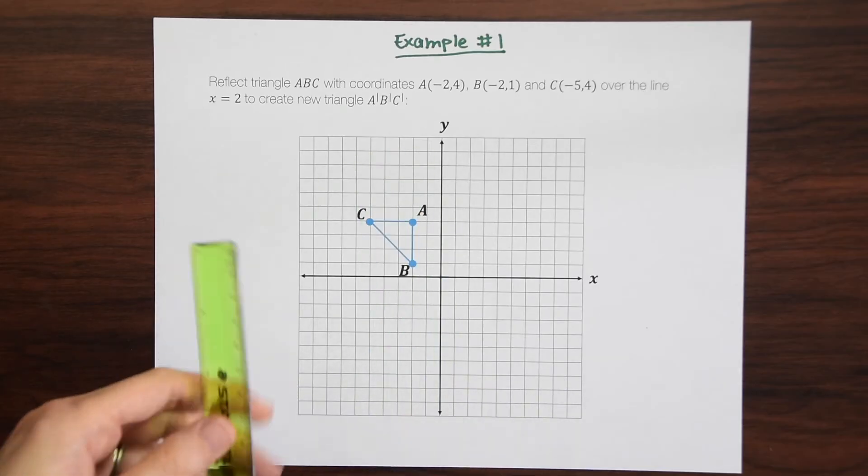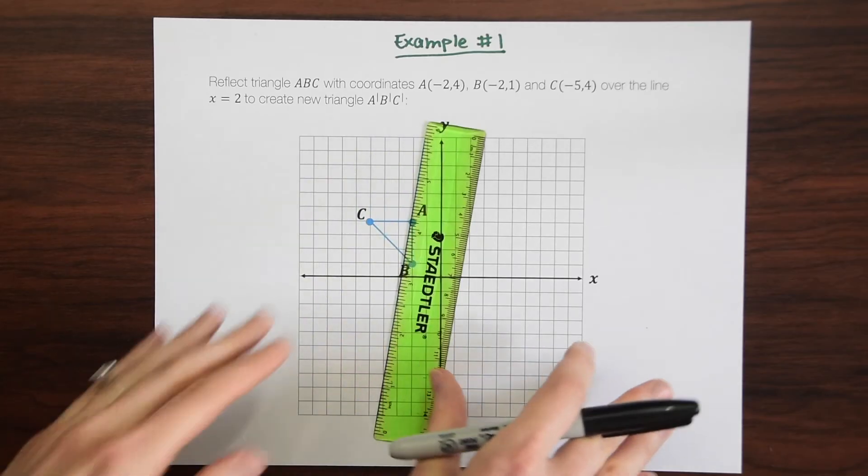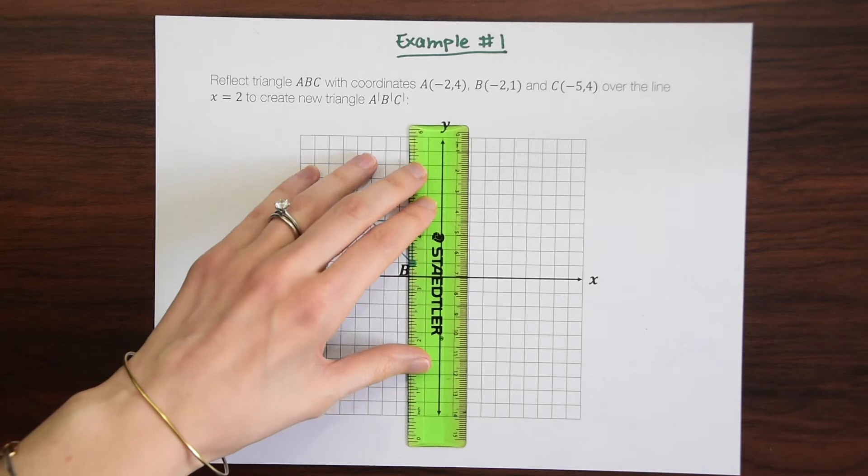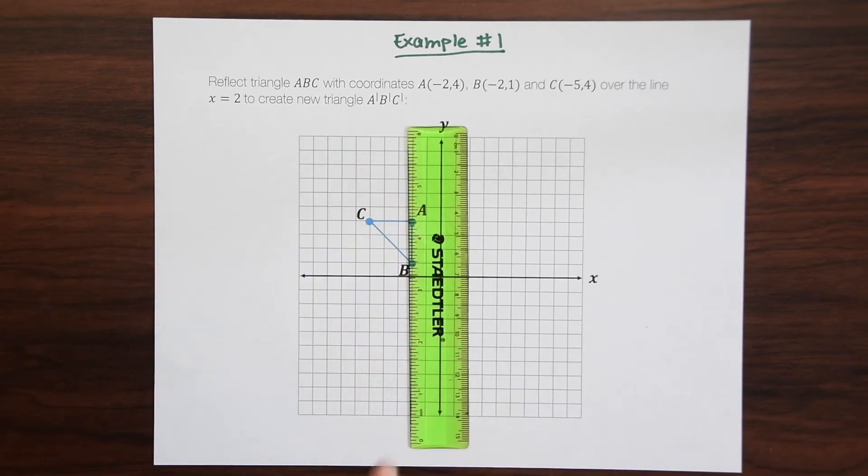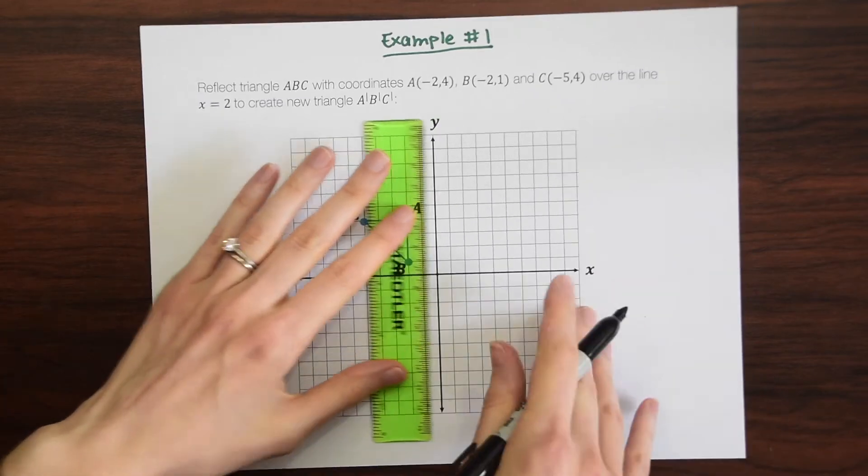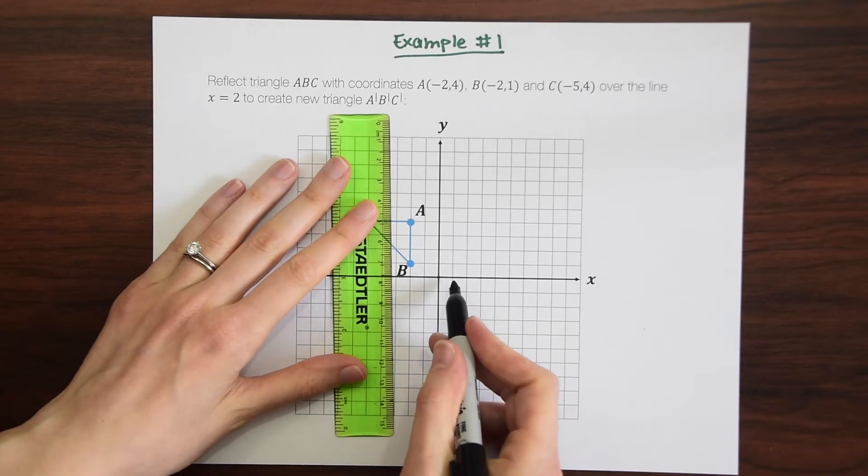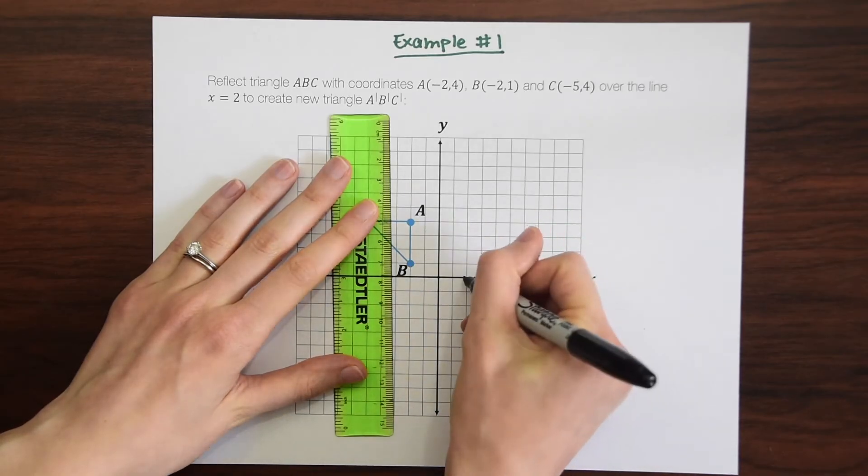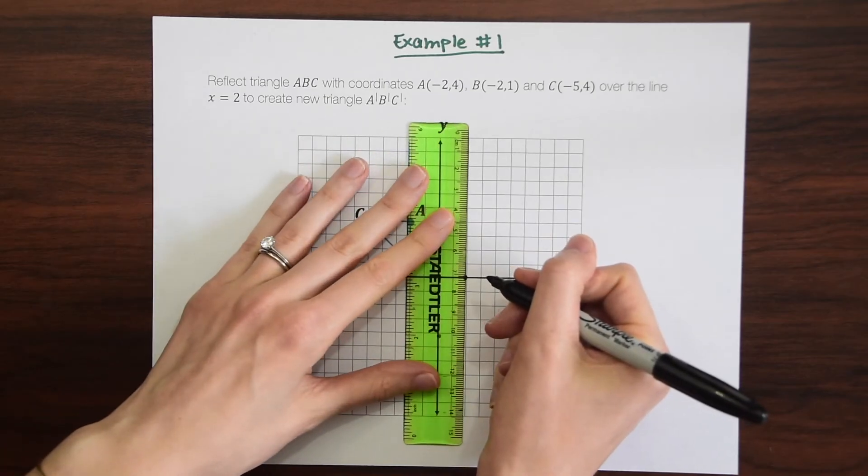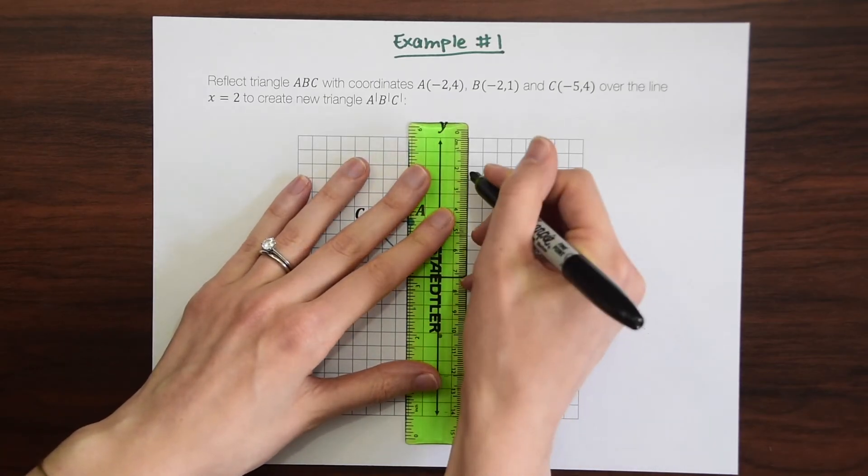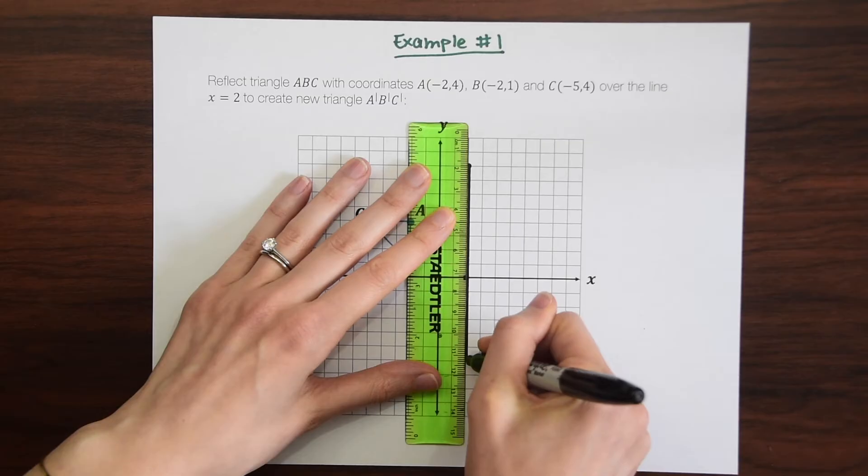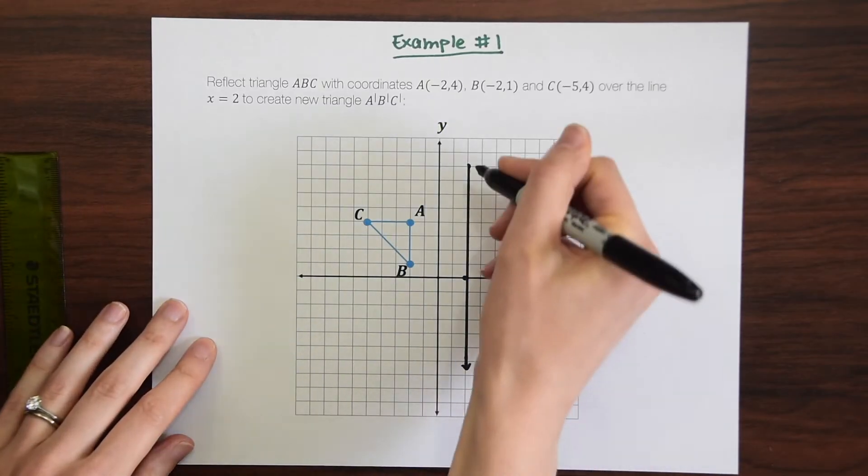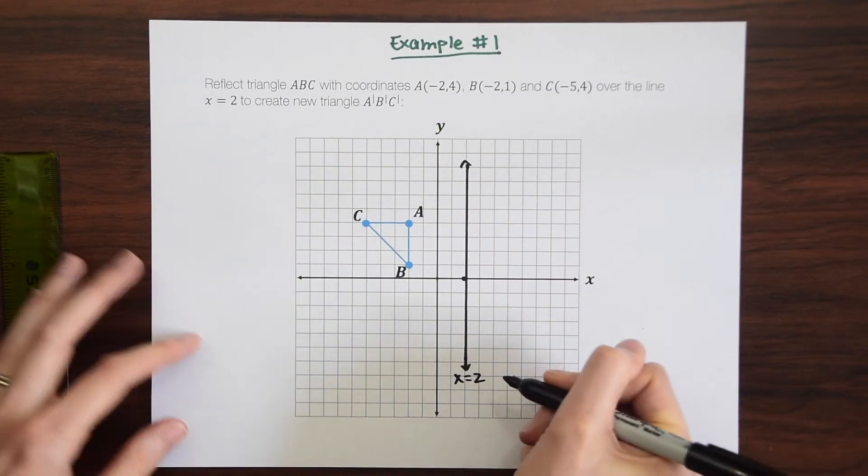So remember, whenever we have a line that is just x equal to a number, it is going to be a straight vertical line going down. So we want to find x equals 2 on our x-axis here, so 1, 2. So that's right here. And then we're just going to draw a line going down this entire thing.